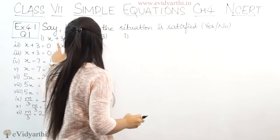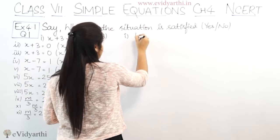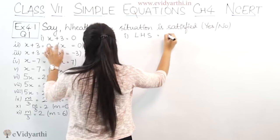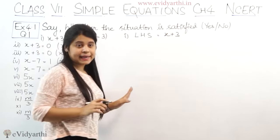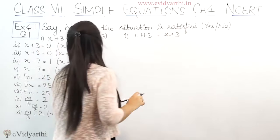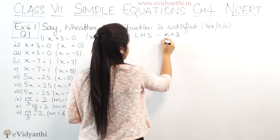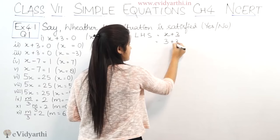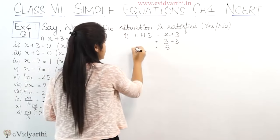We have given x plus 3 equals to 0. First let's see the left hand side: x plus 3. This is the equation. Now we have given x value 3. So where there is x, I will put 3. If I put 3 here, 3 plus 3 is 6.